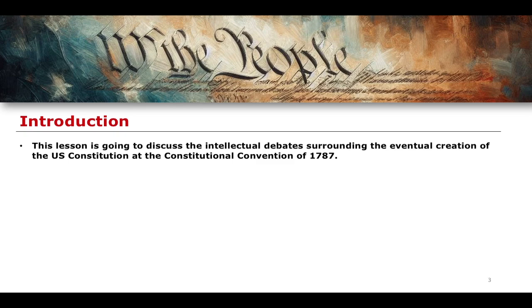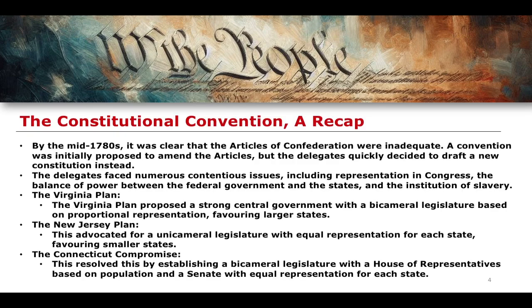The Constitution was created at the Constitutional Convention of 1787. Just to briefly recap what we looked at in the previous lesson: it was clear that a new constitution had to be created. The delegates quickly drafted a new constitution and very quickly decided that the Articles of Confederation were not going to work.